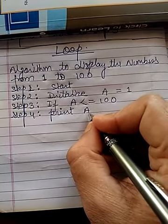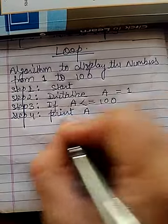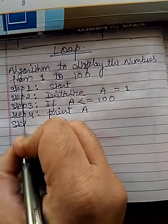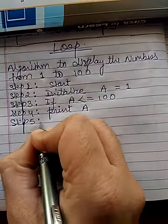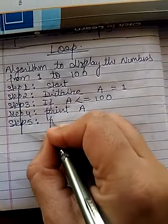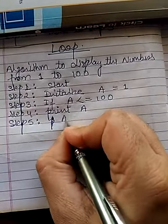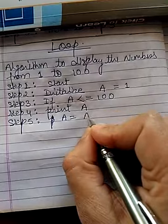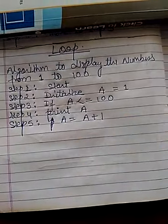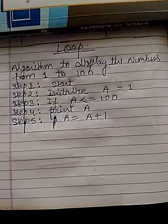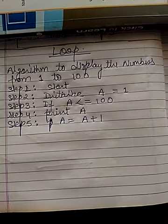Now, we have to increase the value of a by 1, so that it will become 2. Step 5. A equal to a plus 1. Then, the value of a will become 2.